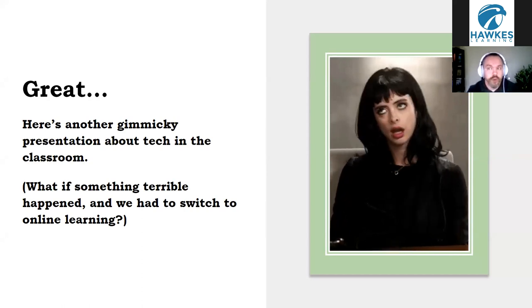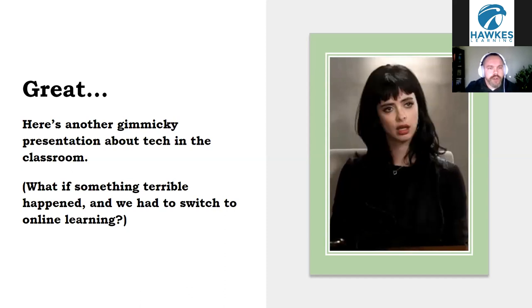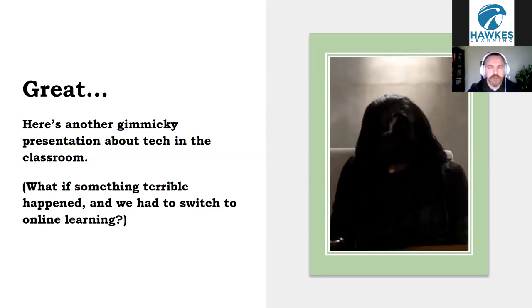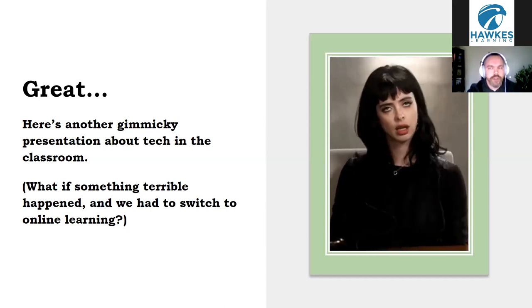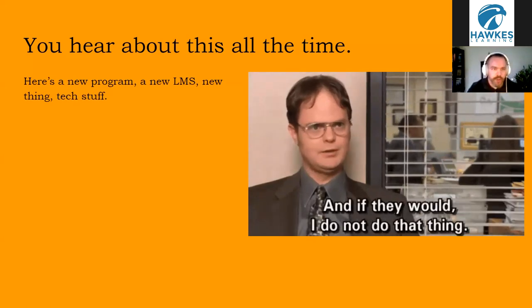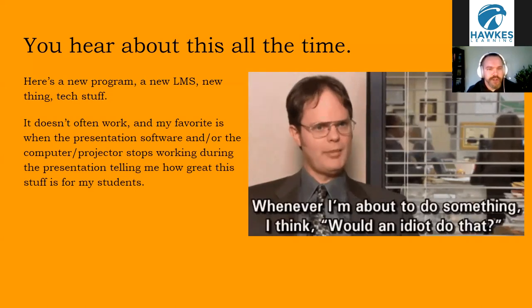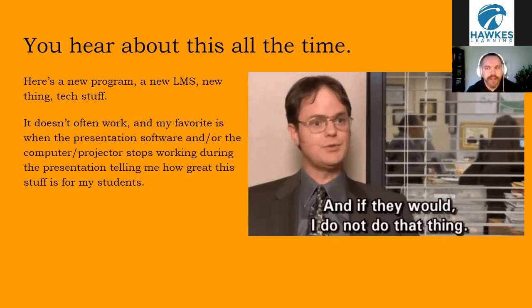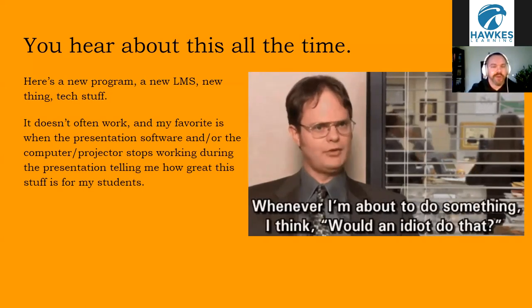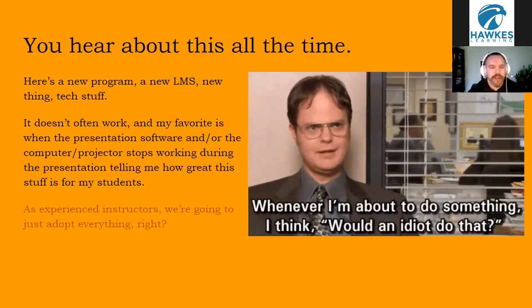Some instructors are probably just getting to the point of, 'We get it — online in the classroom.' But what if something terrible did happen and we suddenly had to switch to online learning? This is actually the second year in a row for Michigan — we have COVID-19 now, and last year there was the polar vortex, where schools were closed for two weeks straight because temperatures dropped below negative 20 degrees. And I love when administrators give presentations about how great new technology is and the presentation software itself doesn't work — this literally happened twice this semester.